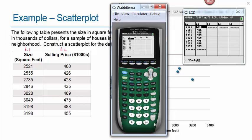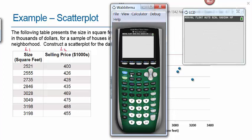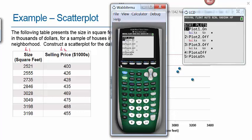Once you have the data in your list, exit out by hitting second mode to get to the home screen. Now we're ready to do a scatter plot. A scatter plot is a graph, so our graphing keys are up here. We want to do a stat plot. How do we get to the stat plot? Second y equals, then pick plot one.